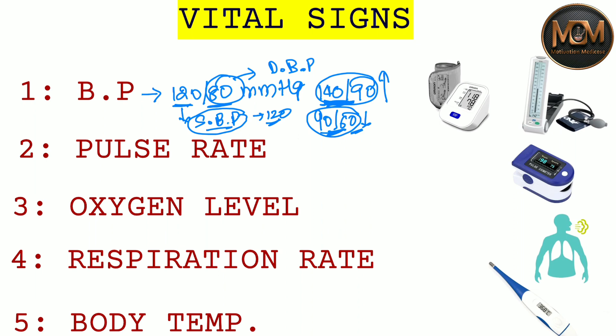To measure BP, we have instruments — the first one is the manual one, and nowadays we also use a digital one. These two instruments allow us to easily measure blood pressure and determine whether it is high or low.